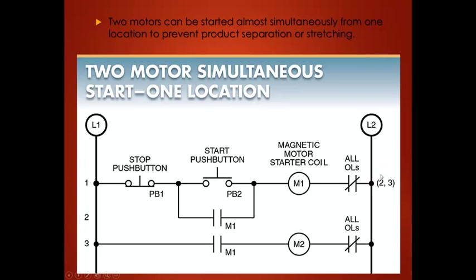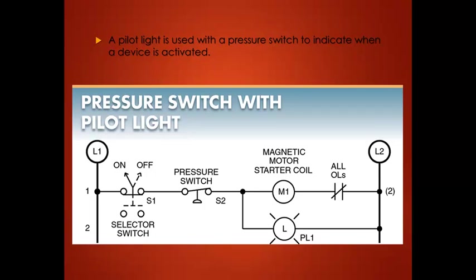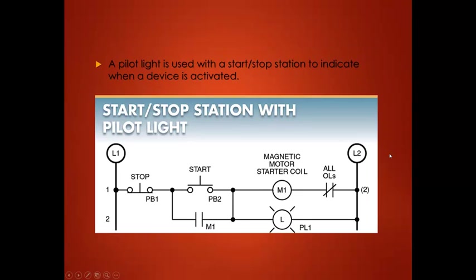A pilot light is used with a pressure switch to indicate when a device is activated. This shows two loads in parallel — whenever the motor starter coil is energized, the pilot light is also energized because both have paths of current flow. In the same circuit with a start-stop station instead of a pressure switch, pushing start runs the motor starter and illuminates the pilot light.